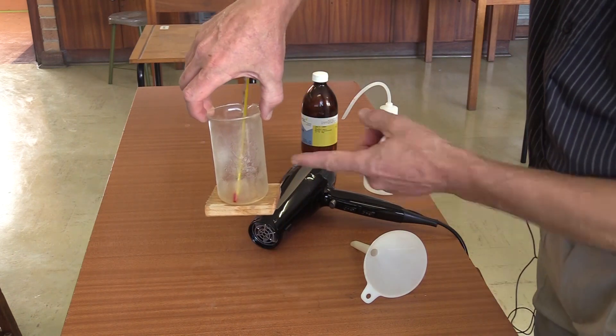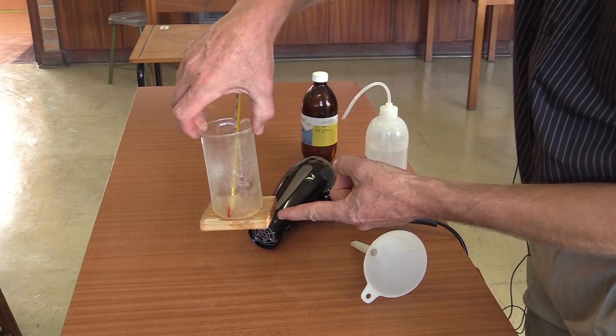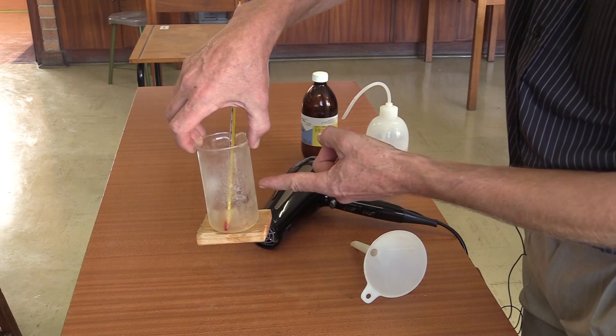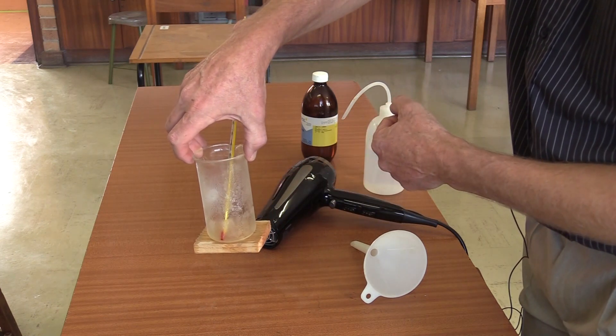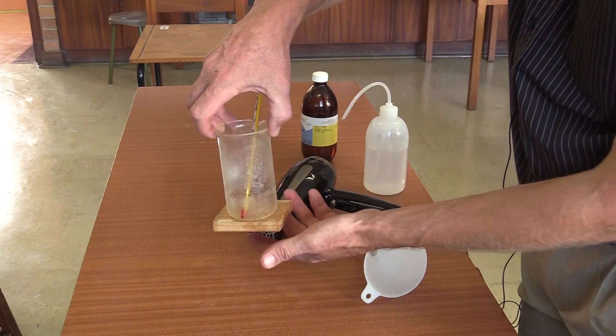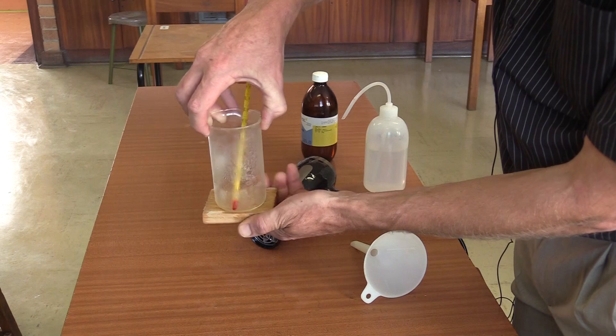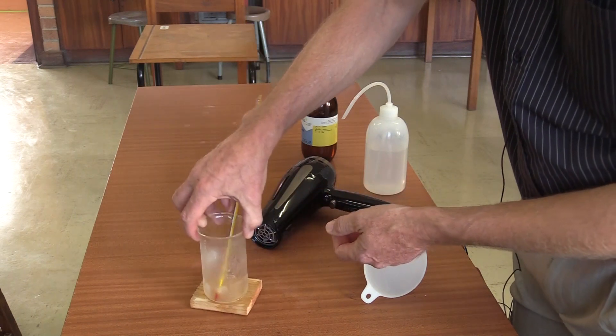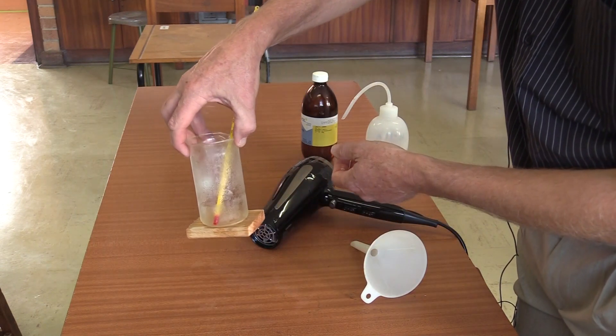And now we see that the wooden block is actually stuck to the beaker. Why has that happened? Well, the bit of water that was underneath is actually frozen and it's stuck quite strongly to the bottom of the beaker.